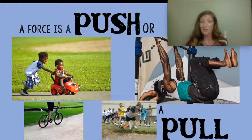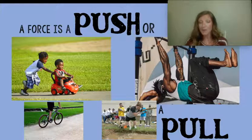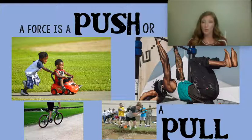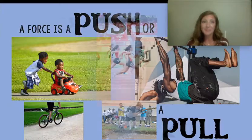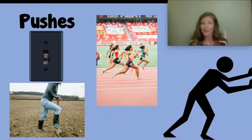Hop over to the other side of the screen. Do you see the gentleman pulling himself closer to the bar? He's using his arms — or the team at the bottom of the screen pulling the rope closer to their body. A pull moves an object towards the pull. How many of you like to run? I love to run.